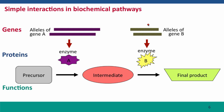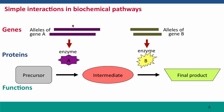First we can consider a mutation in gene B. If it's a loss-of-function mutation in only one allele, we expect a fairly normal phenotype because we still have one functional copy. However, if both alleles carry loss-of-function mutations, no enzyme B is produced, the reaction won't be catalyzed, and there'll be no final product. What about a mutation in gene A? Again, if only a single allele is knocked out, we expect a normal pathway. But if both alleles are knocked out, there will be no enzyme A, the first reaction won't happen, there will be no intermediate, and as a follow-on, because there's no intermediate, the second reaction can't proceed either — there will be no product, even though enzyme B is working perfectly.